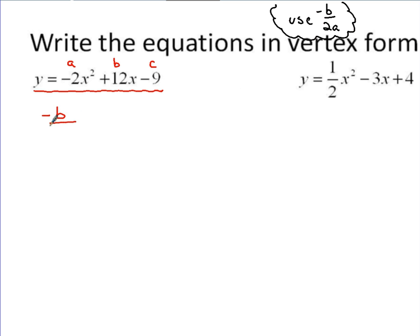So if I evaluate what negative b over 2a is, that would be negative 12 over 2 times a, 2 times negative 2, which would be negative 12 over negative 4, or 3.